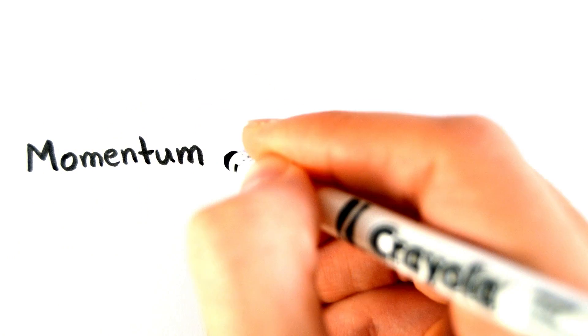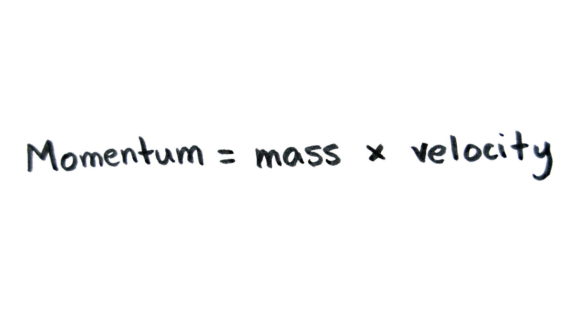Momentum is the quantity of motion of a moving body. It is defined as the product of mass times velocity. Since velocity is a vector quantity, meaning it has both magnitude and direction, momentum must be a vector quantity too.